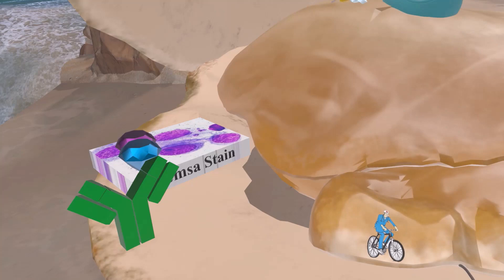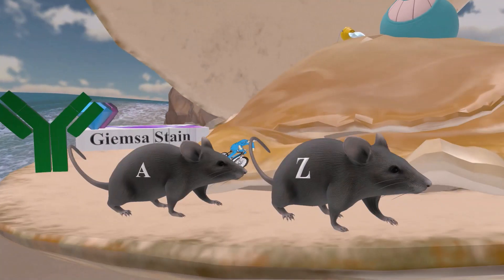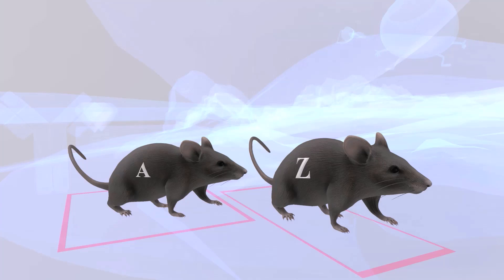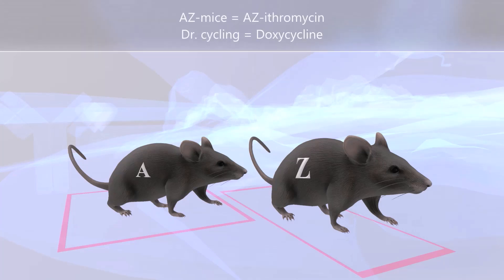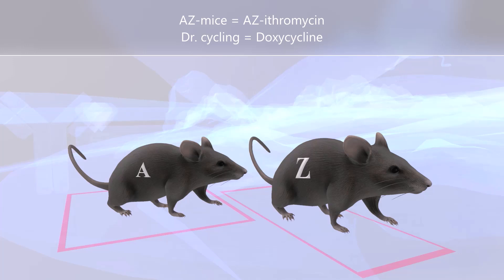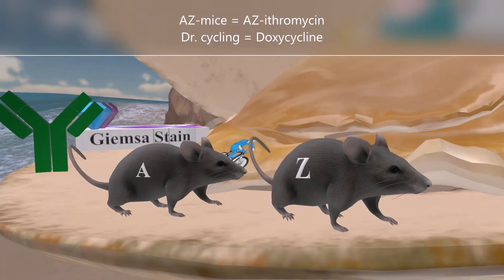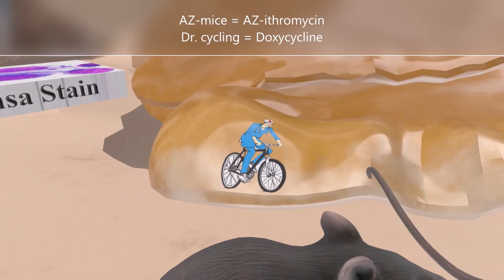Now let's get to treatment for Chlamydia. In the clam over here, we see the AZ mice — one has an A on him and one has a Z — for azithromycin. Azithromycin is the preferred treatment for Chlamydia because it's a one-time treatment. Alternatively, doxycycline can be used. There's a random picture of a doctor on a cycle — 'doctorcycling' for doxycycline — which may also be used to treat Chlamydia.